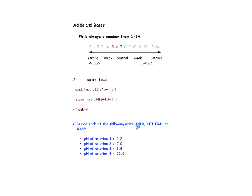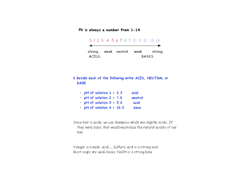Let's test our knowledge. We need to write acid, neutral, or base beside each pH value. Acids are below 7 — so 2.3 is an acid, and so is 5.6. Anything over 7 is a base, so 10 is a base. If it's exactly 7, it's neutral.